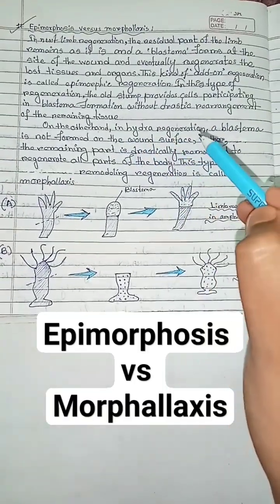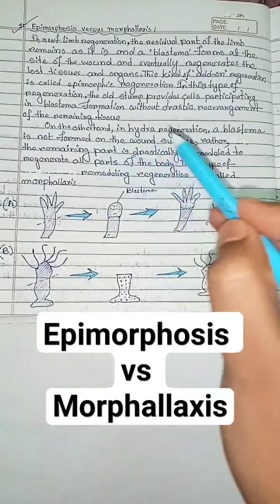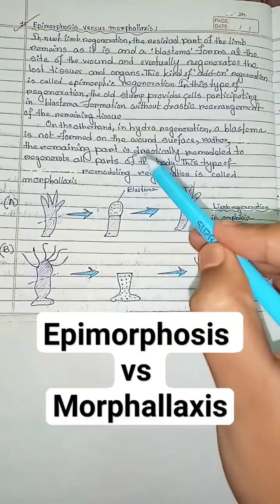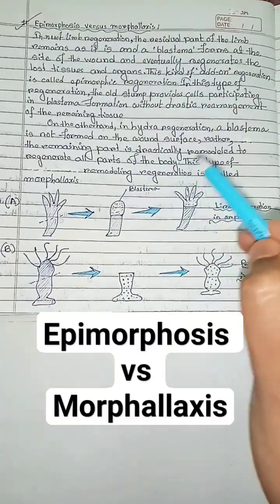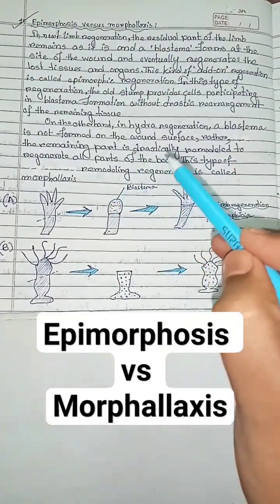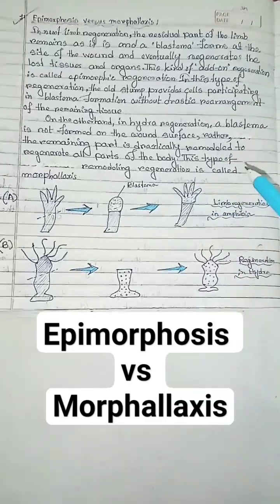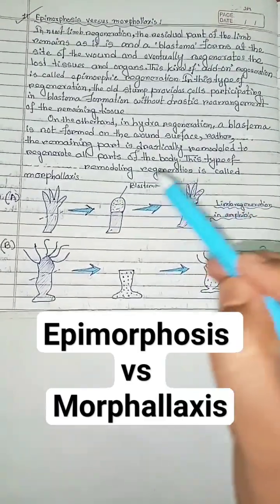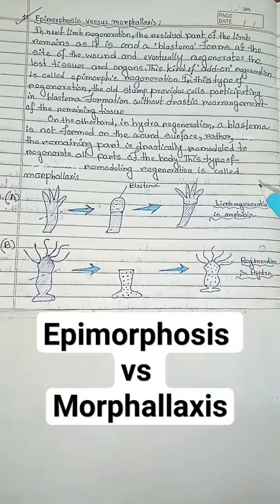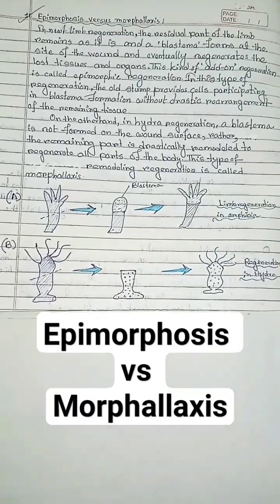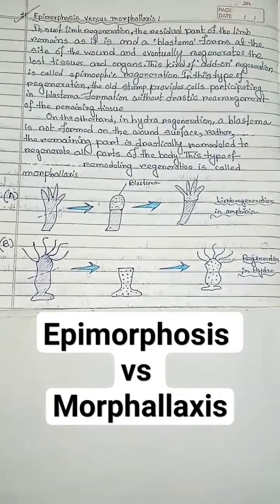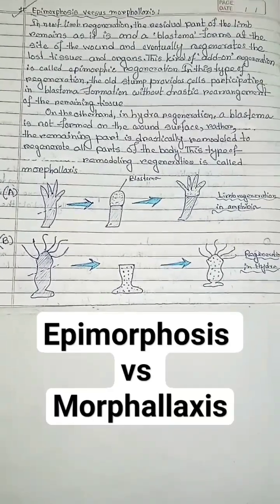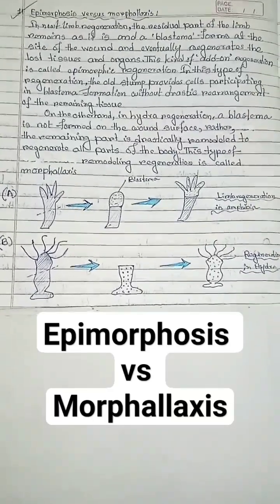On the other hand, in hydra regeneration, a blastema is not formed on the wound surface. Rather, the remaining part is drastically remodeled to regenerate all parts of the body. This type of remodeling regeneration is called morphallaxis.